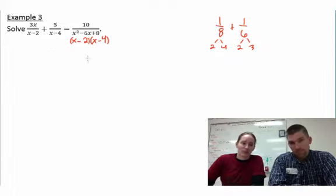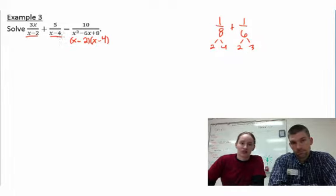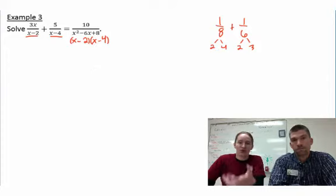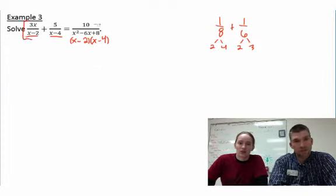So your common denominators have to have every single representation here. So we have to have an x minus 2, we have to have an x minus 4. And in this denominator, we already have both of those. So we just need our common denominator to be x minus 2 times x minus 4. That is correct.